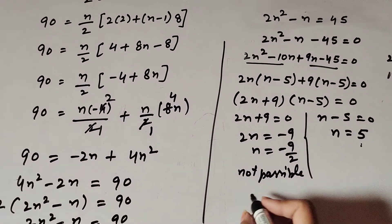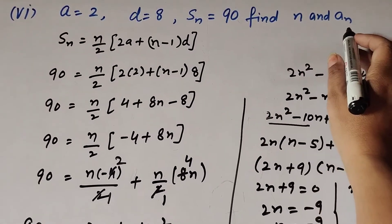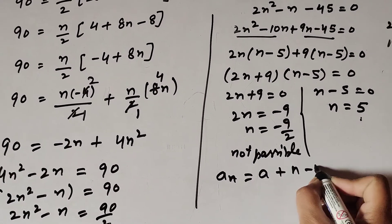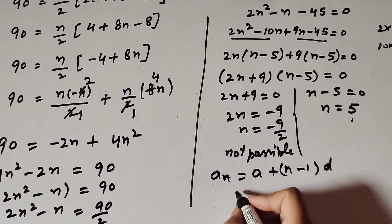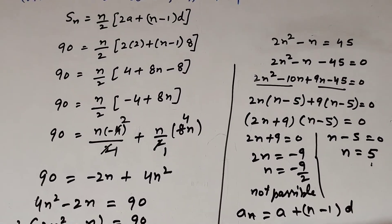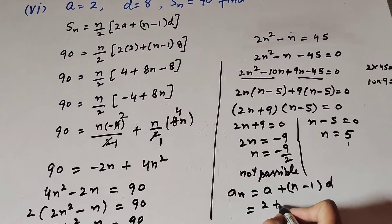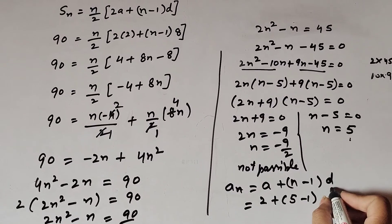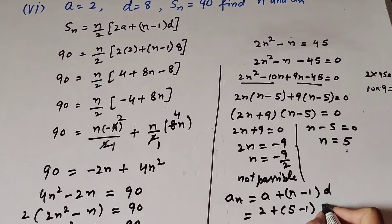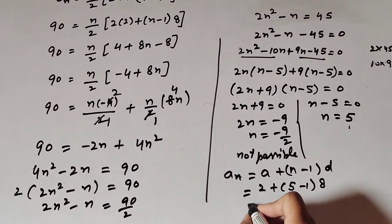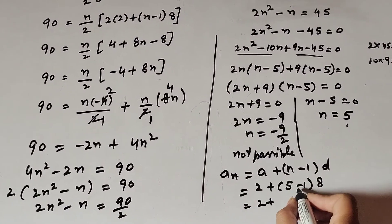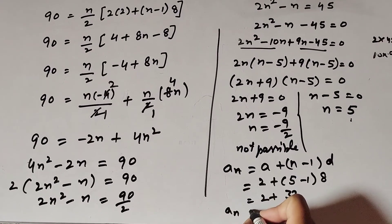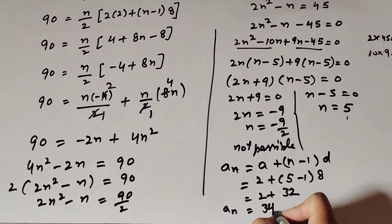So the total number of terms is 5, which is a positive whole number. Now we find the nth term, which is the last term of the AP: an equals a plus n minus 1 times d. Substituting: a is 2, n is 5, d is 8. So an equals 2 plus 5 minus 1 times 8, which is 2 plus 4 times 8, equals 2 plus 32, equals 34. The nth term of the AP is 34.